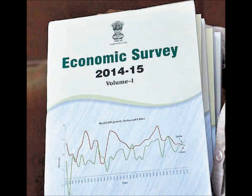Suppose your father is a general serviceman and your mother is a housewife. There are two children — you and your sister. You visit Domino's Pizza twice a week with your girlfriend and go to a multiplex cinema hall on Saturday and Sunday. Your sister is doing college and spends three thousand rupees every five days on hair straightening at a beauty parlour. On top of this, there are general family expenses.